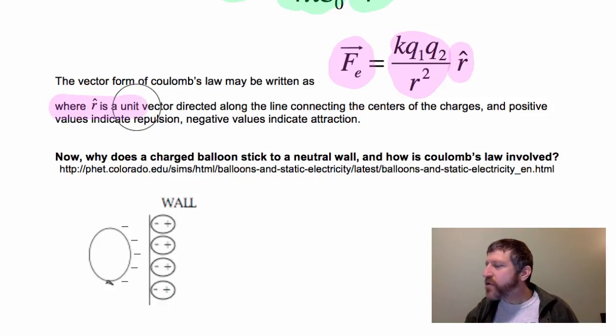R hat is just a unit vector directed along the line connecting the centers of the charges. If you get a positive value, that means they're repelling. So a positive times a positive, if both charges are positive, you get repulsion. If they're both negative, you also get repulsion.